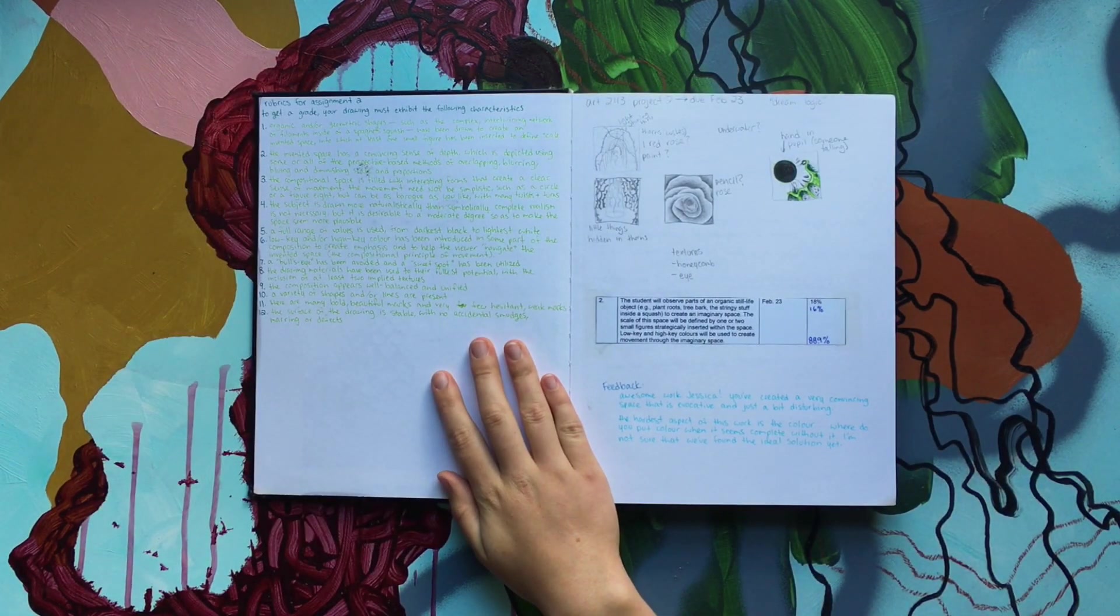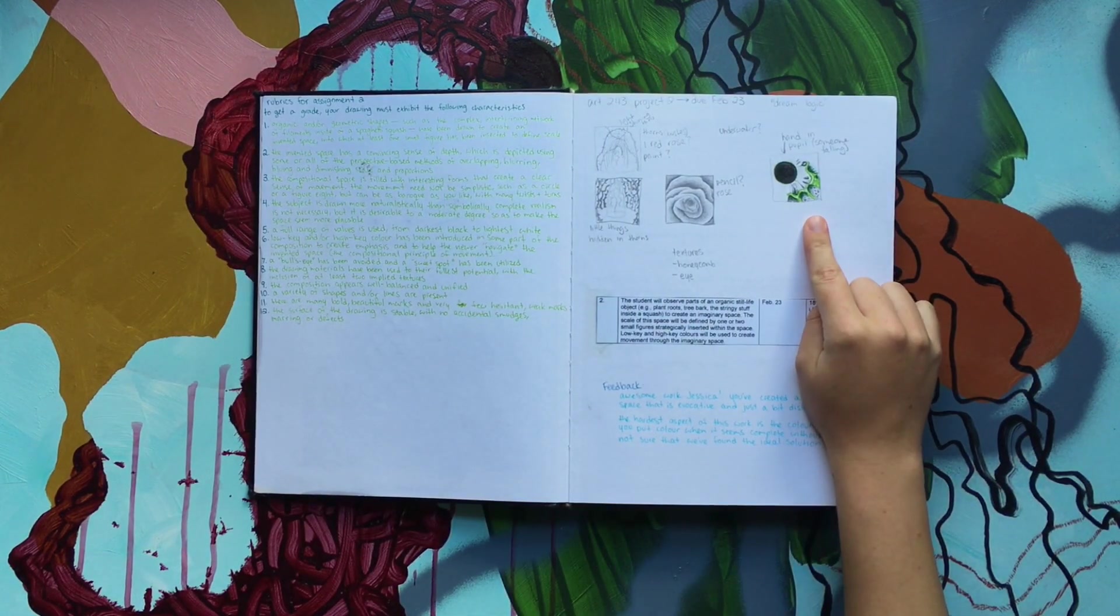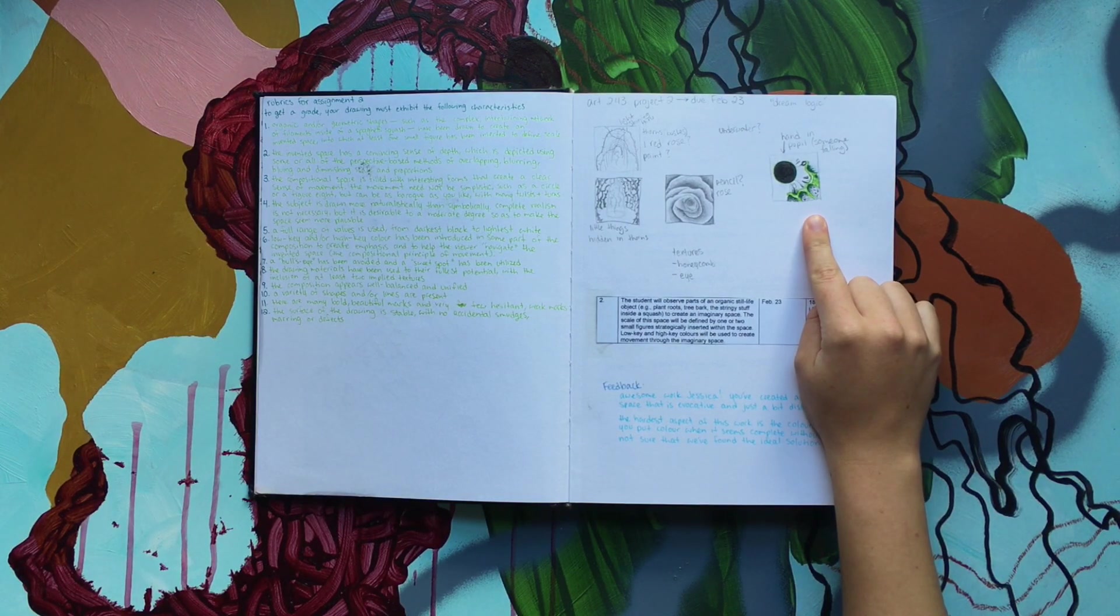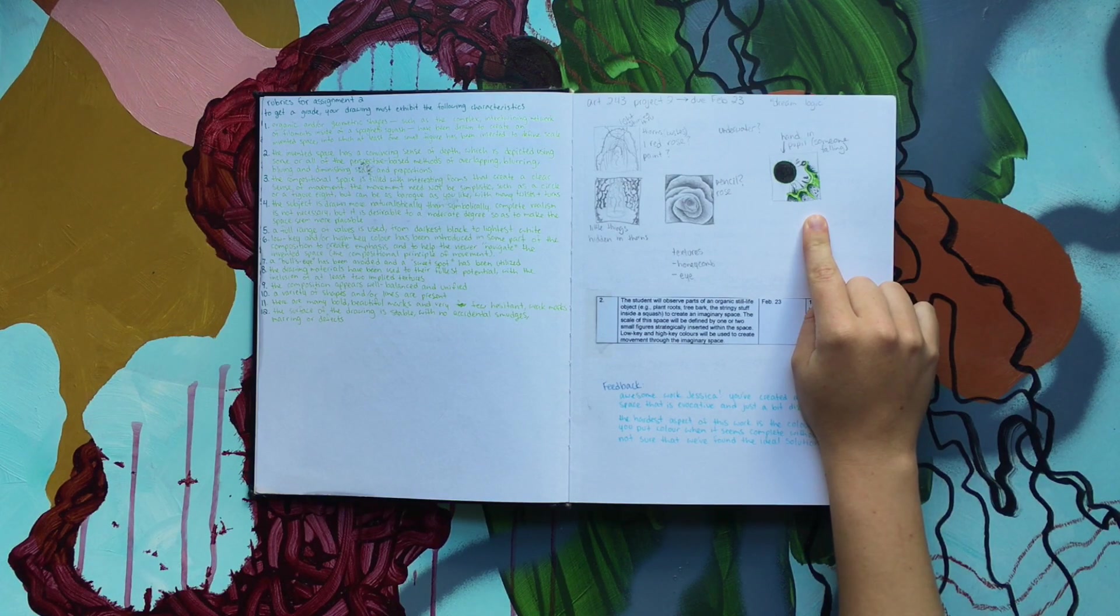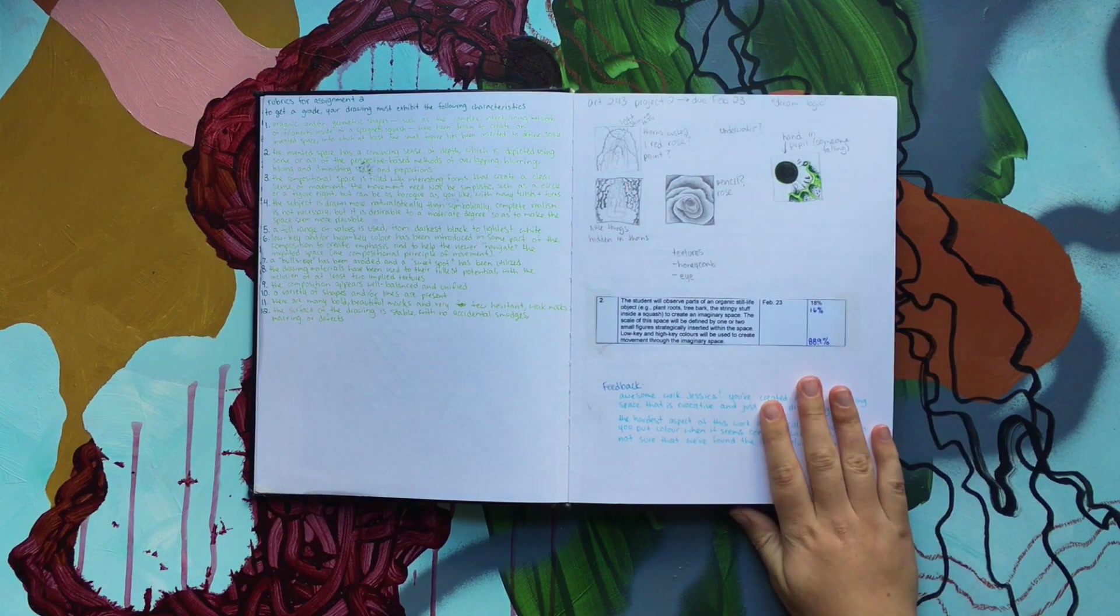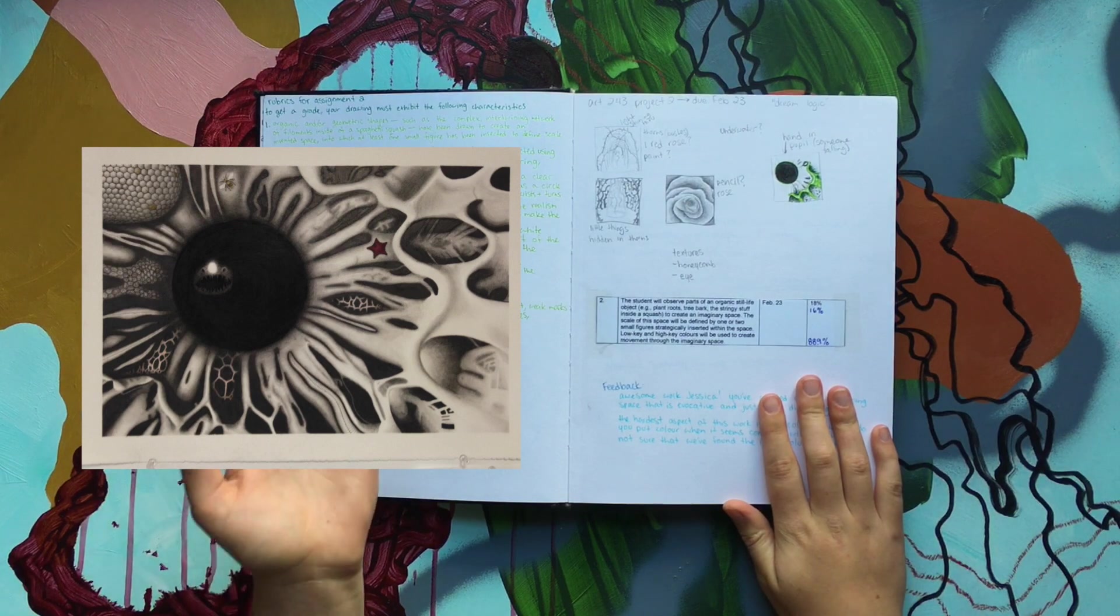Another project for that class, where I took an iris and we had to add I think three life forms into basically a non-existent space or area. If I find that, I'll also put a picture of it here.